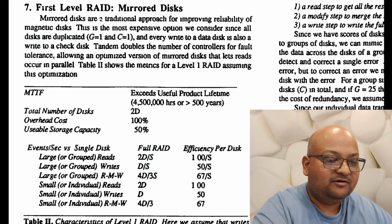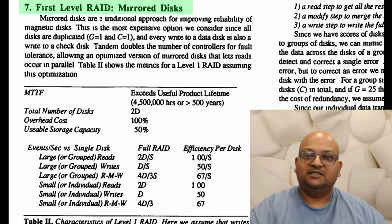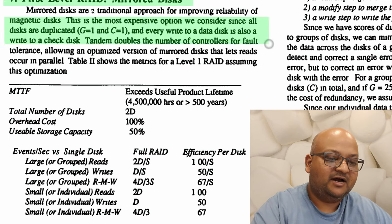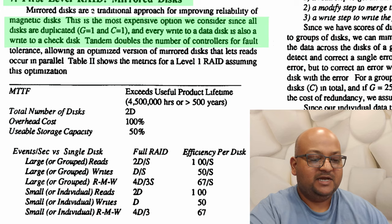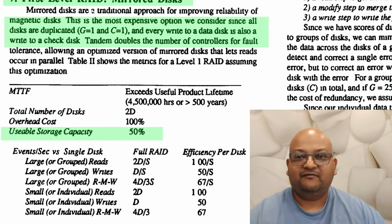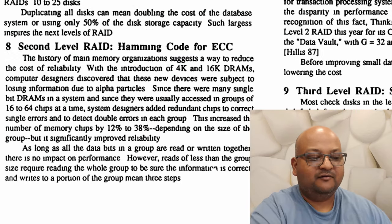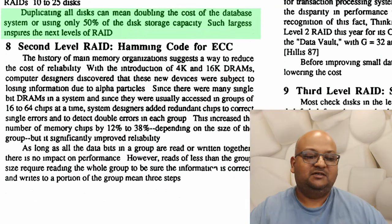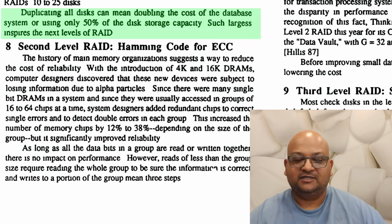Let's start by looking at RAID level 1, which is the simplest possible thing you could do: mirror your data across all the disks in the array. Every write to a data disk is also a write to a check disk. This means we're only using half our capacity for actual data storage and the other half is for check disks.